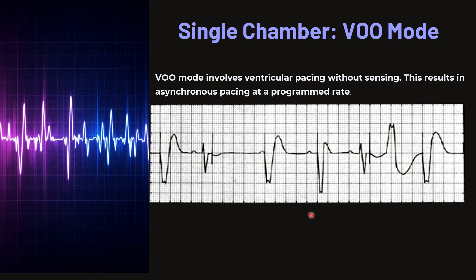On the VOO mode ECG, there is a regular fixed interval between pacing spikes. The pacemaker fires with ventricular response, and it will also fire after intrinsic activity. So it is a fixed rate with no relation to the intrinsic electrical activity of the heart.